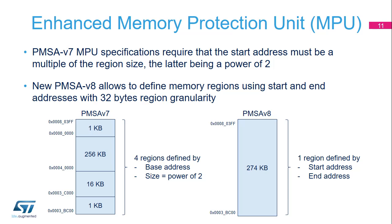The STM32L5 supports 8 regions for the secure MPU and 8 regions for the non-secure MPU. The provided example compares MPU region settings in PMSA v7 and PMSA v8 when the area to be mapped is 274 kilobytes long starting at hexadecimal address 0x3BC00. Due to the power-of-two size and alignment constraint, four regions are required for PMSA v7, whereas only one unique region is required for PMSA v8.